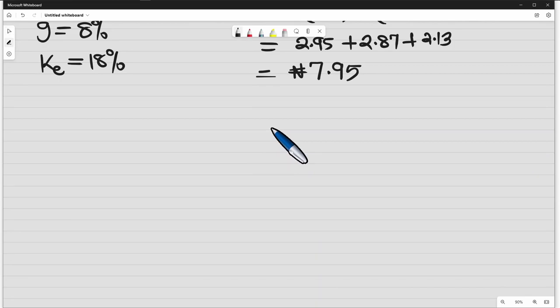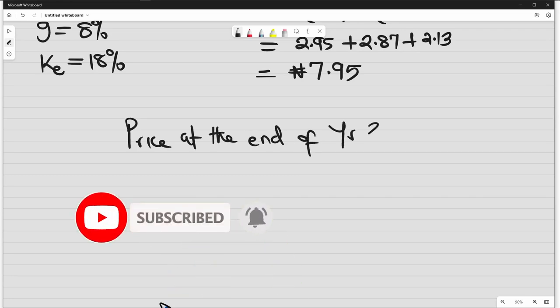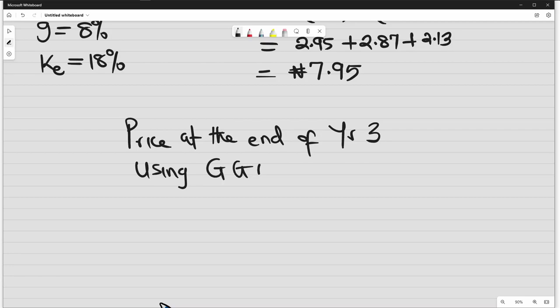The second part is we find the price at the end of year 3 using the Gordon growth model. Don't forget our Gordon growth model. So at the end of year 3, this Gordon growth model, the P3 will be, so if you see here, we have 0, we have 1 here. So if it's 3 here, then the dividend would be dividend at year 4. D4 all over Ke minus g.